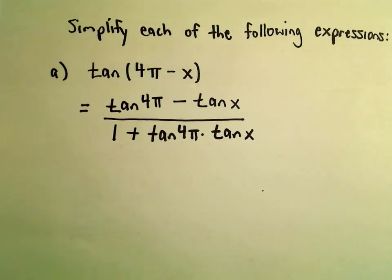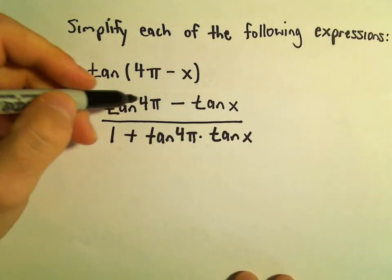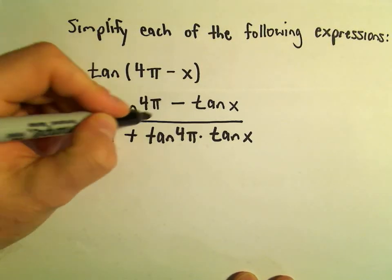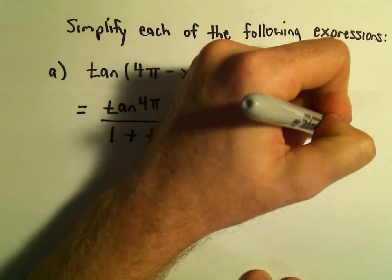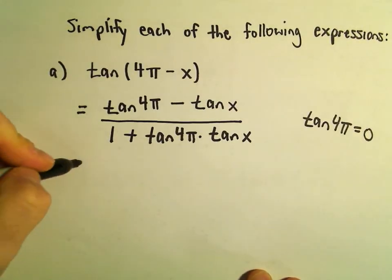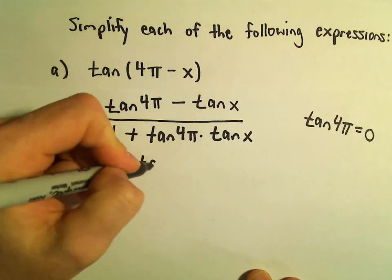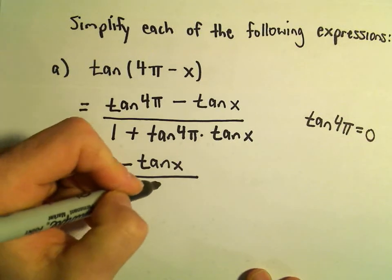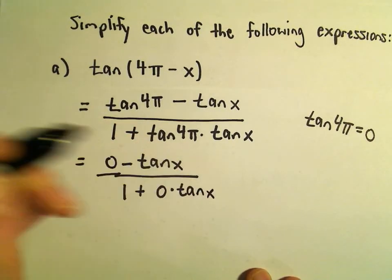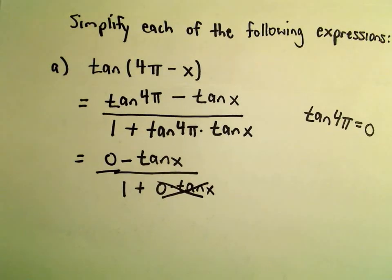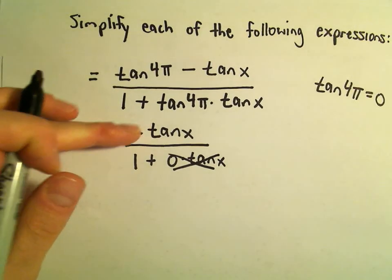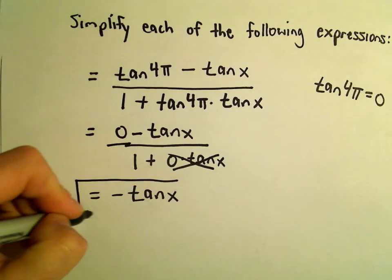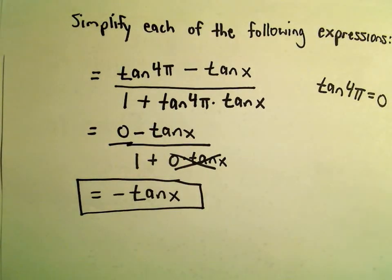Well, now it's just a matter of cleaning this up a little bit. Tangent of 4π, that's going to be sine of 4π over cosine of 4π, and tangent of 4π is just going to simply equal 0. So really we're just left with 0 minus tangent x in the numerator. In the denominator we would have 1 plus 0 times tangent x. Well, 0 times tangent x we can just get rid of that. All we would be left with would be negative tangent x over 1. So our solution in this case, all of this would simply reduce down to just the expression negative tangent x.